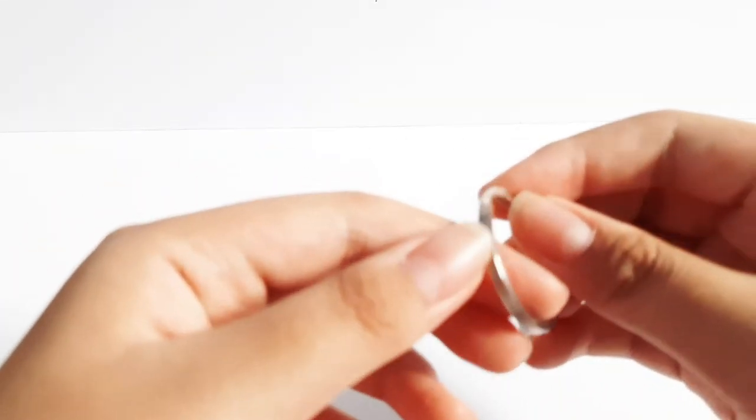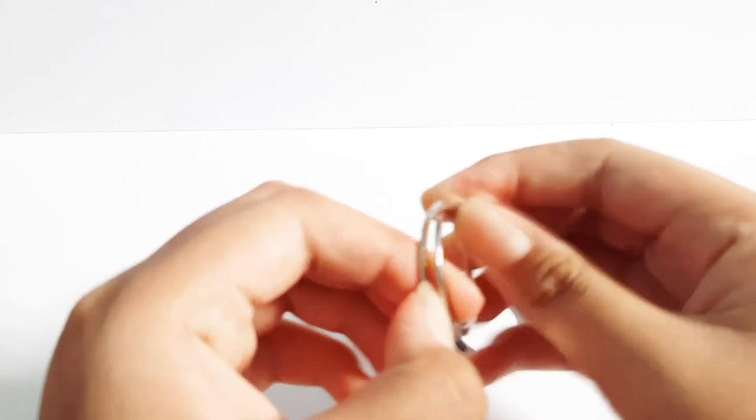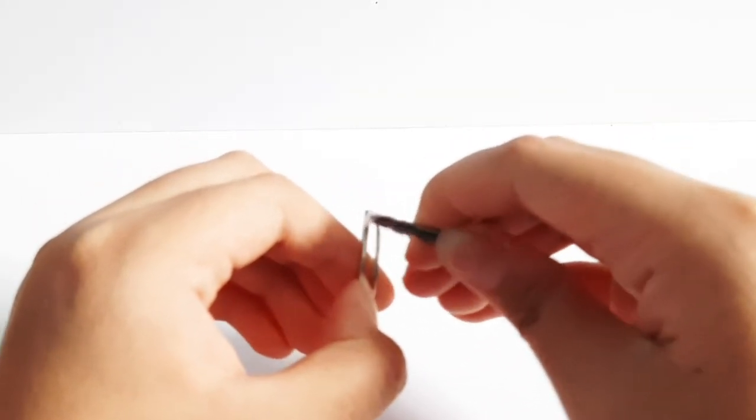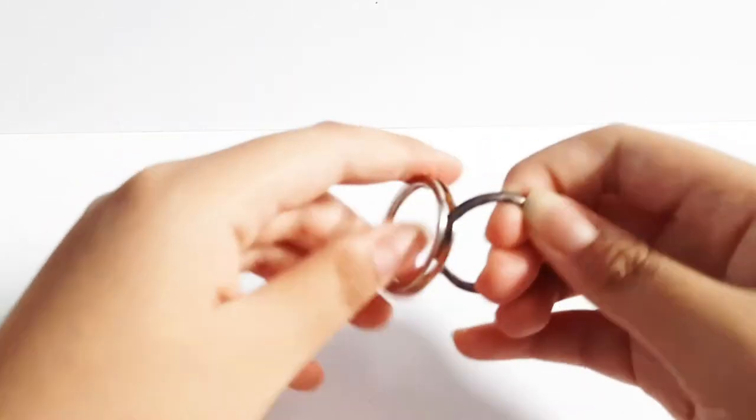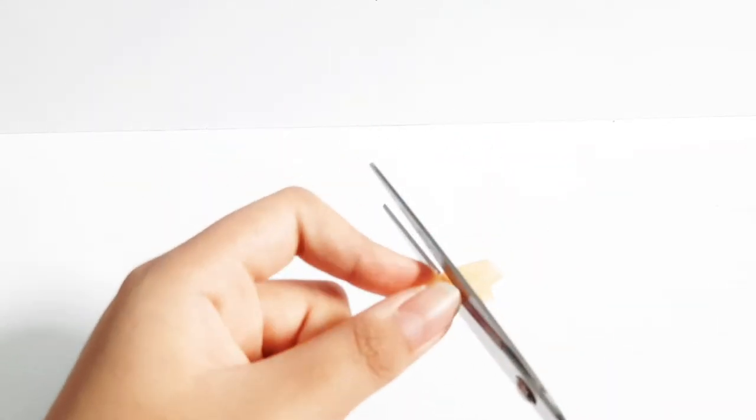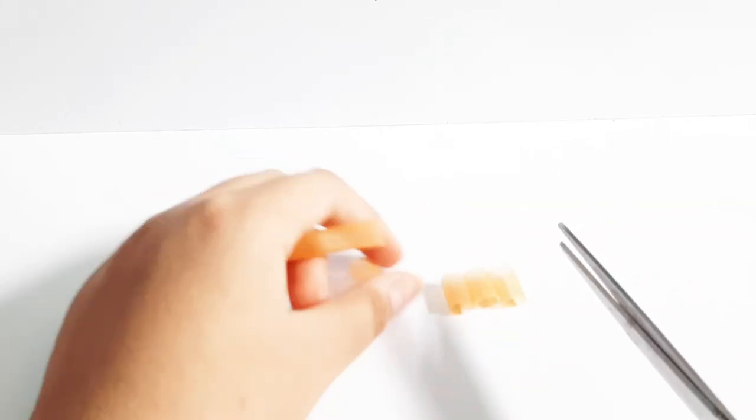The first thing that you want to do is take one of your key rings and open it like that, and slide the other one inside just like this. Now put this to the side.